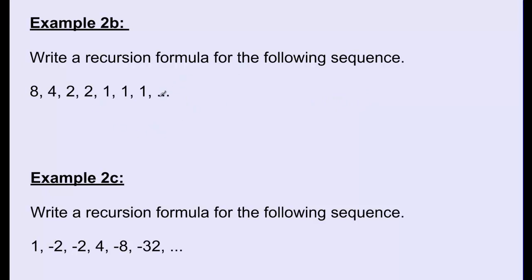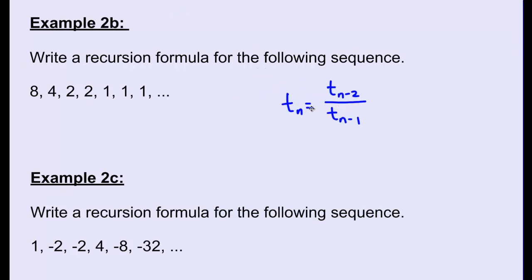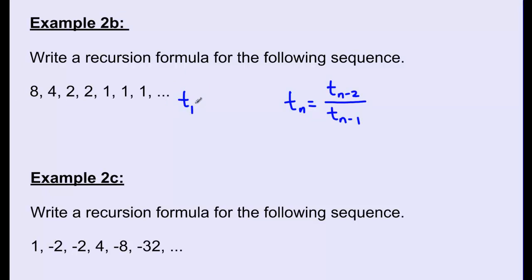The general term is Tn equals Tn minus 2 divided by Tn minus 1 — that is, the term two terms before it divided by the term directly before it. Since the formula uses two preceding terms, we must define T1 equals 8 and T2 equals 4. All three parts together form the complete recursive formula.